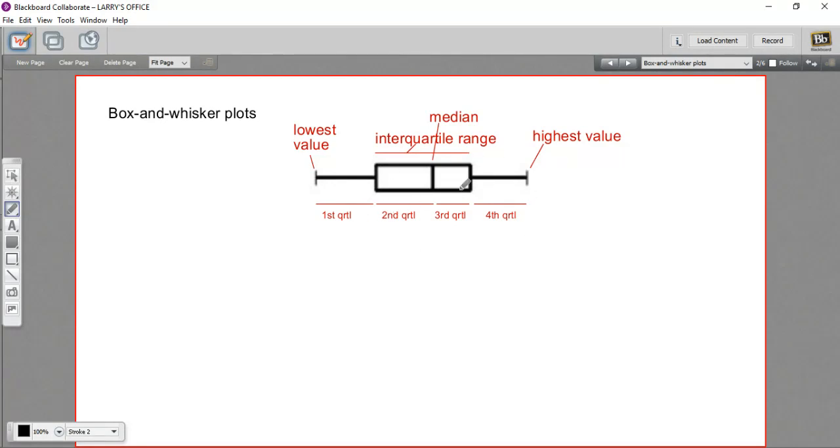So when you see one of these diagrams, you can immediately know what value the median is. You just look for this line here, and then there'll be a scale or some numbers to tell you what that is. You can probably also find numbers for the first, second, third, and fourth quartile. And of course, the lowest value is going to be right here. The highest value is going to be right here. So there's a lot of information packed into one of these box and whisker plots.